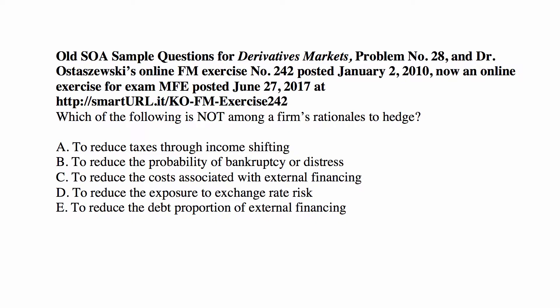So here let us look at these possibilities: A) to reduce taxes through income shifting; B) to reduce the probability of bankruptcy or distress; C) to reduce the costs associated with external financing; D) to reduce the exposure to exchange rate risk; E) to reduce the debt proportion of external financing.